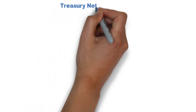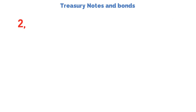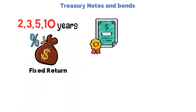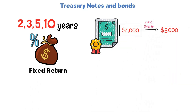T-notes are intermediate-term bonds maturing in 2, 3, 5, or 10 years that provide fixed returns. T-notes typically have a $1,000 face value; however, the 2- and 3-year maturities have a $5,000 face value.